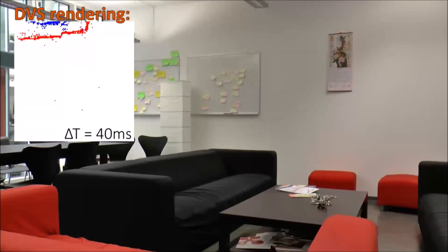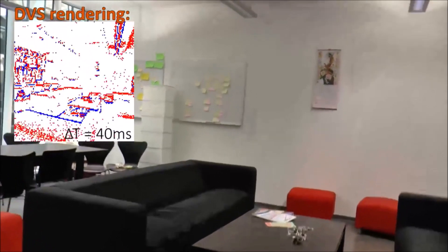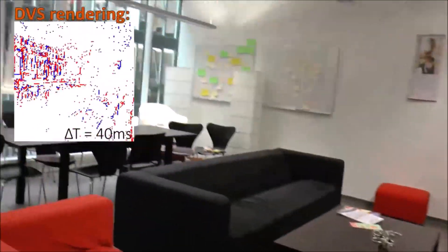Event cameras, such as the dynamic vision sensor, are novel devices that output pixel-wise intensity changes asynchronously at the time they occur.